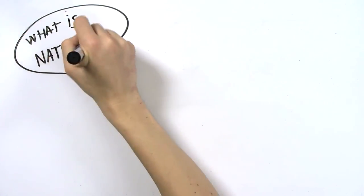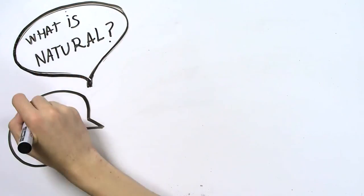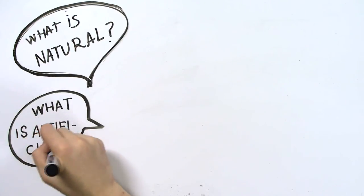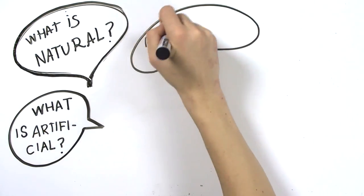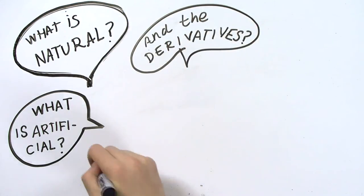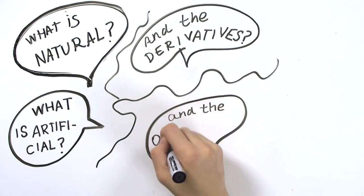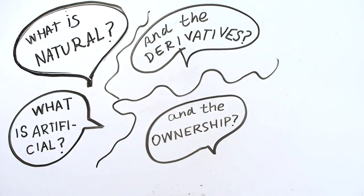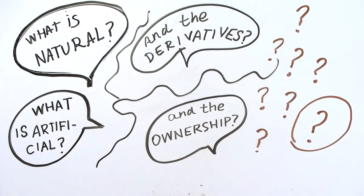What is nature and what is artificial? Those are the most famous ethical questions in synthetic biology. The answer may be easy for the initial modified product, but what about the derivatives? Where do we draw the line? Who has the ownership? Just like a chain reaction, any answers to those questions would not end but start more and more discussions.